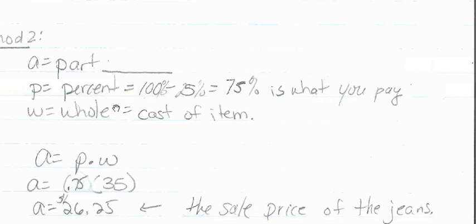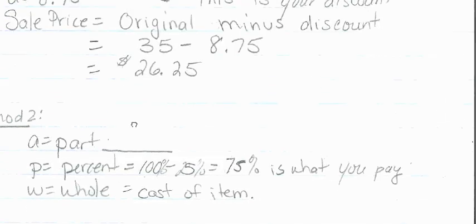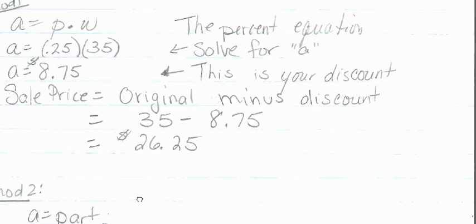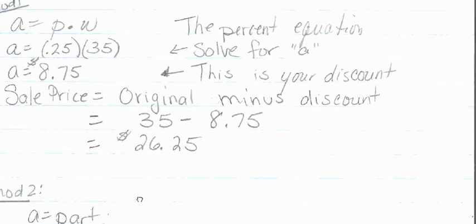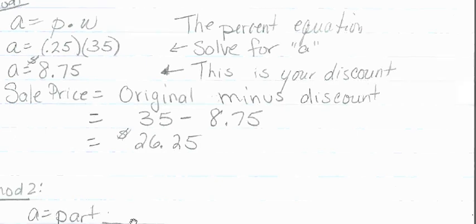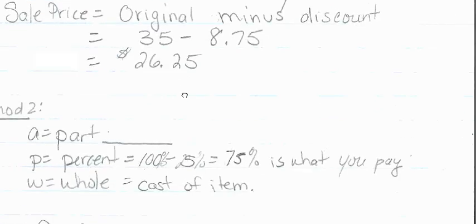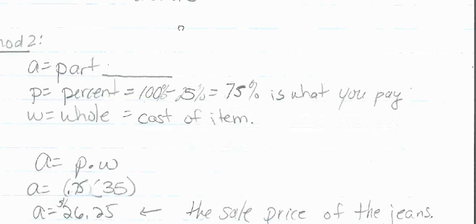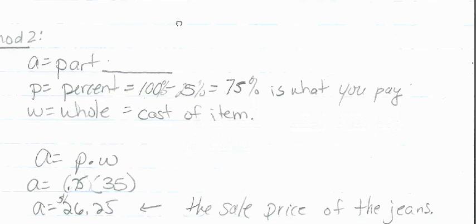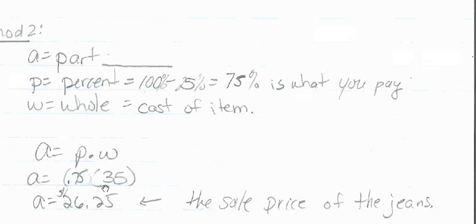Or in method 1, we first find the discount and then subtract second. So it's a matter of where do you want to subtract: do you want to subtract your discount after you find it, or do you want to subtract on your percentage right off the top and get your sale price right off the top? So you decide which method is easier. I'm not going to force you to do one method or the other - you choose.